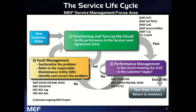If the service starts to degrade or faults are encountered, we move into fault management. This is where we start engaging the service OAM fault management toolset to identify the problem, isolate the problem, and correct the problem. We may need to move back and engage some of those service activation testing tools, including latching loopback, to do more diagnostic and troubleshooting. Once the problem is corrected, we move back to do the proactive health assessment of the service.